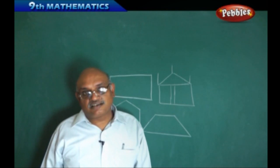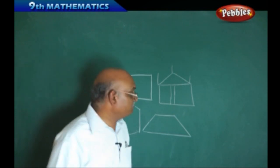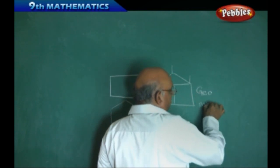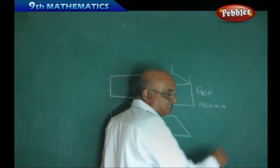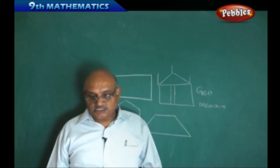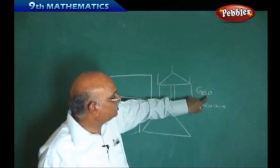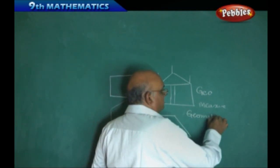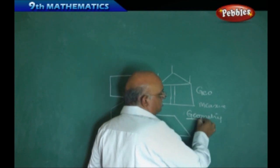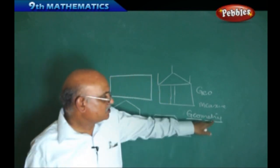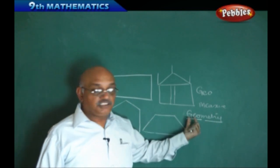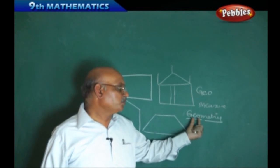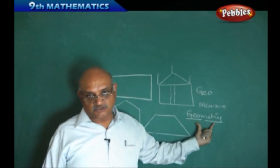Geometry is a word derived from Greek. It is spelled G-E-O-M-E-T-R-Y and contains two words: 'Geo' and 'Metri.' Metri refers to measurement, and Geo is considered as the total global or earth. Therefore, if we want to measure the whole thing, geometry is going to be useful.